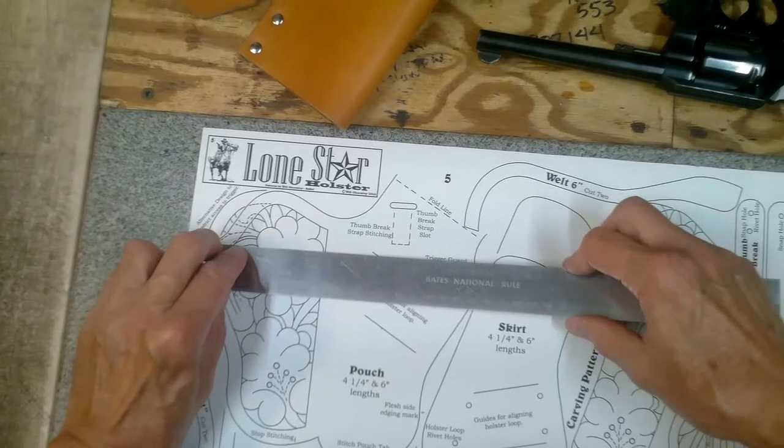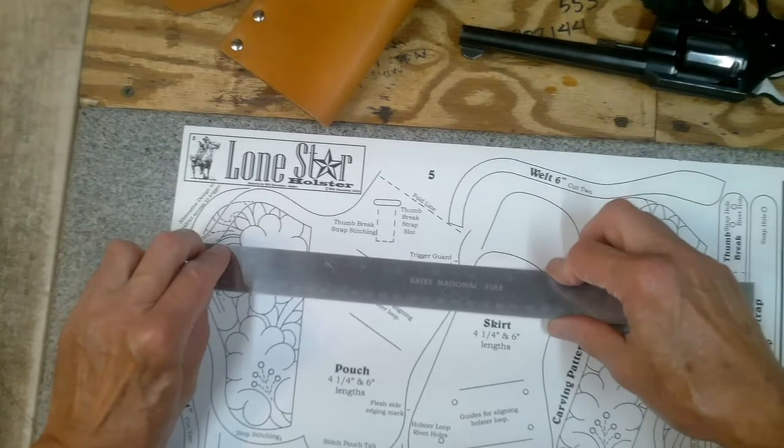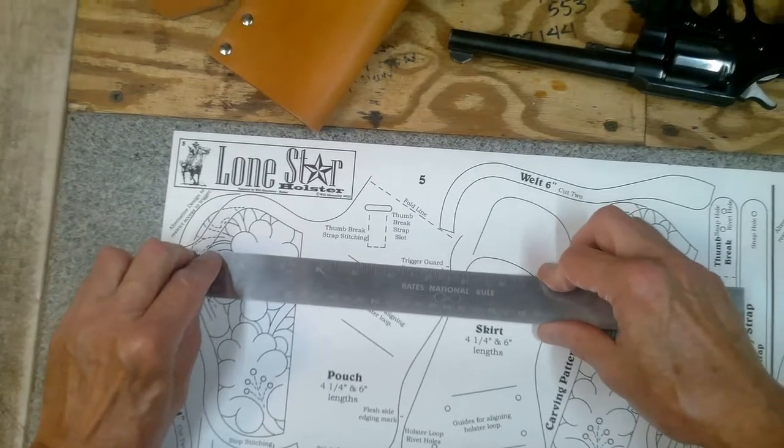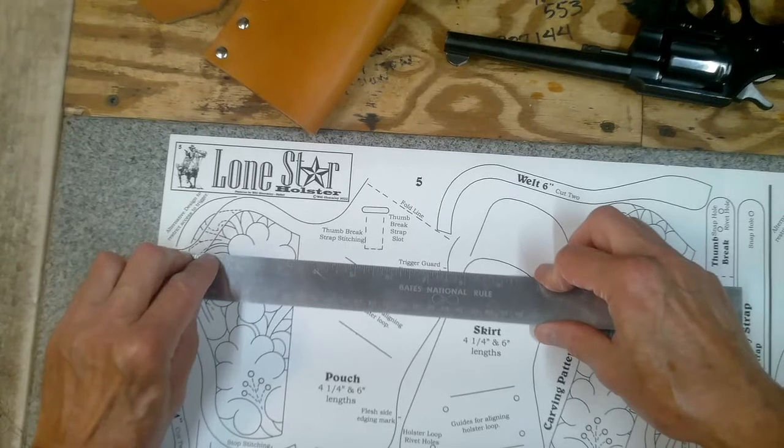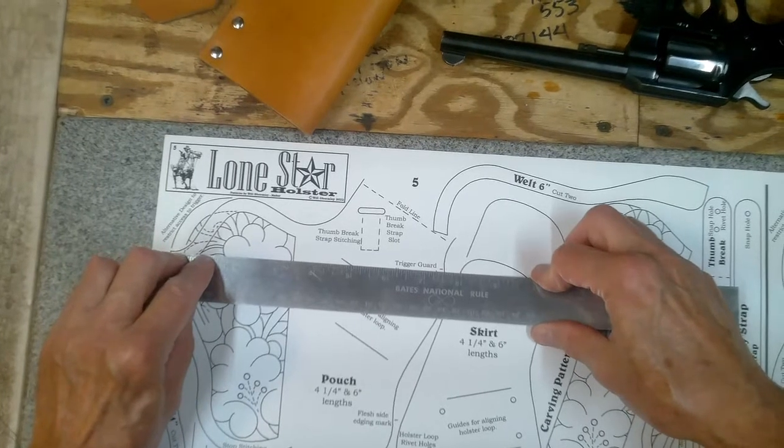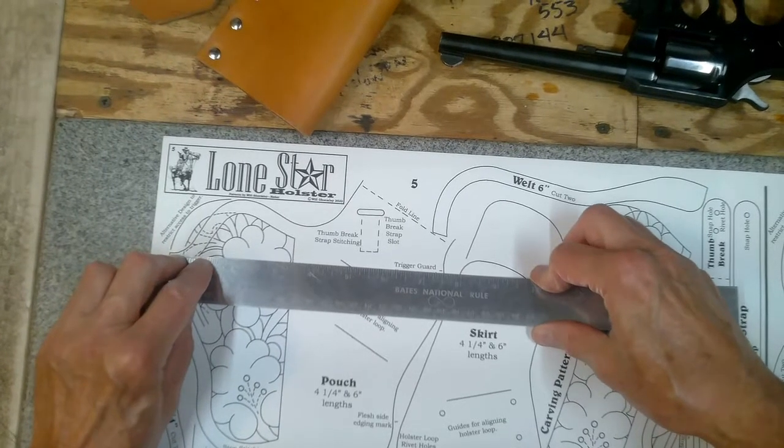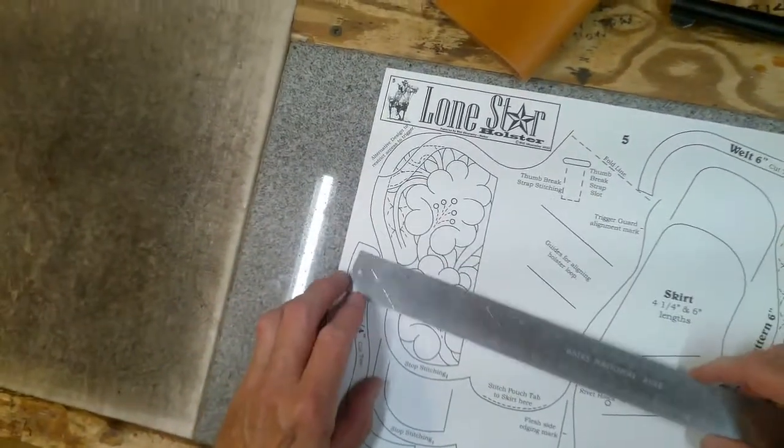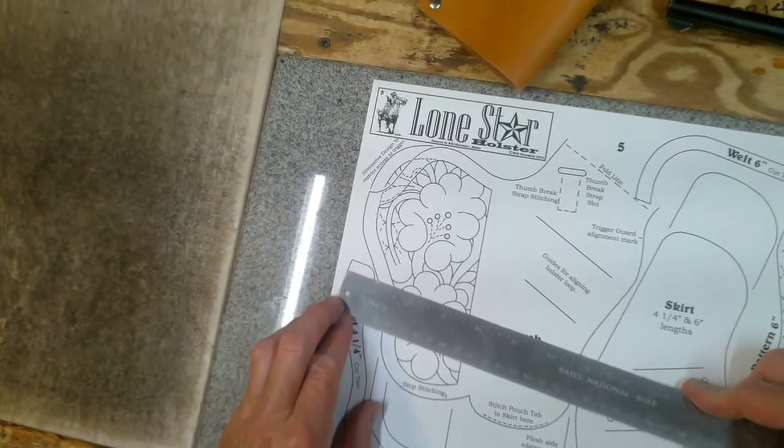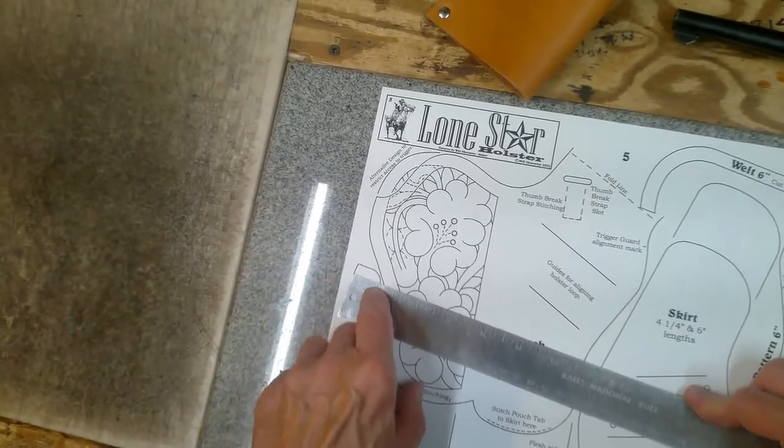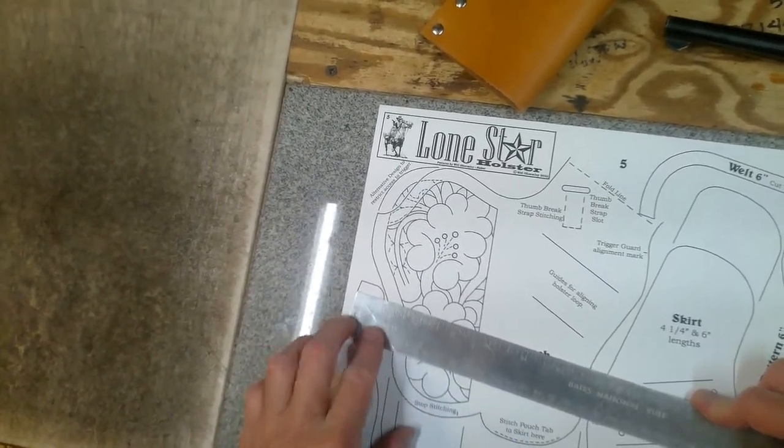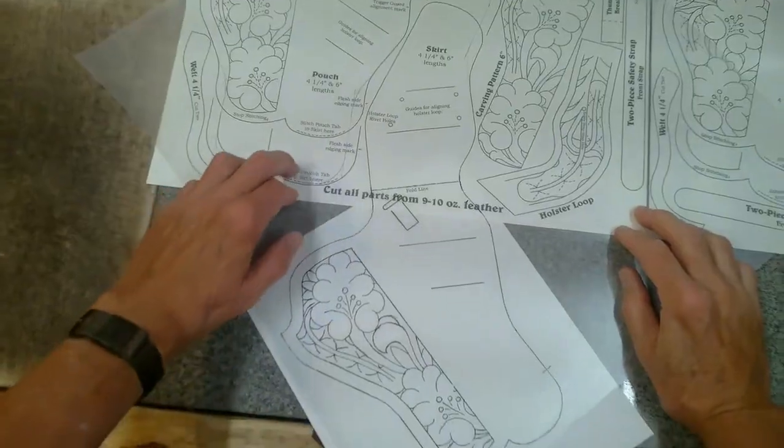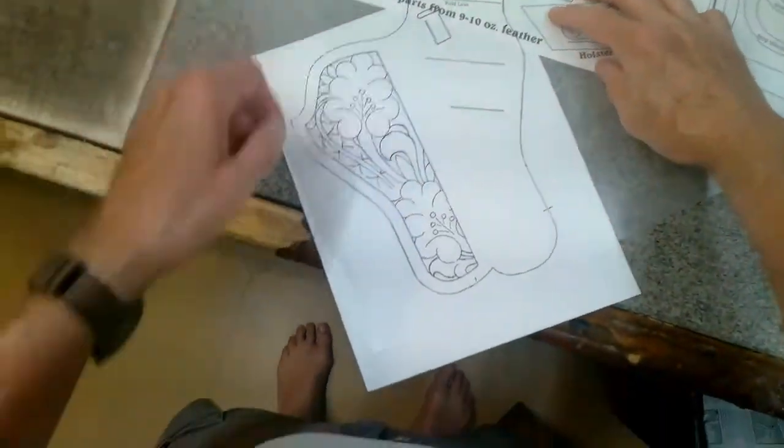Measuring across the holster pattern where the trigger guard will rest on the top of the welt, in the case of holster pattern number five, the holster pattern measures right at seven and a half inches and the welt measures thirteen sixteenths inches, very close to what the welt gauge measures. Having decided on pattern number five, the first step is to trace the pouch.